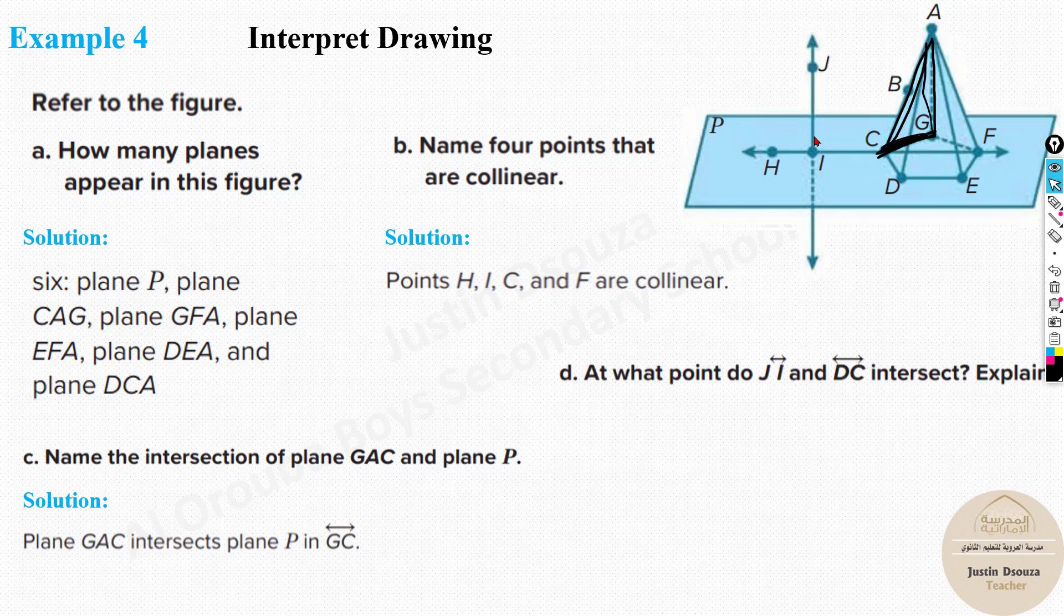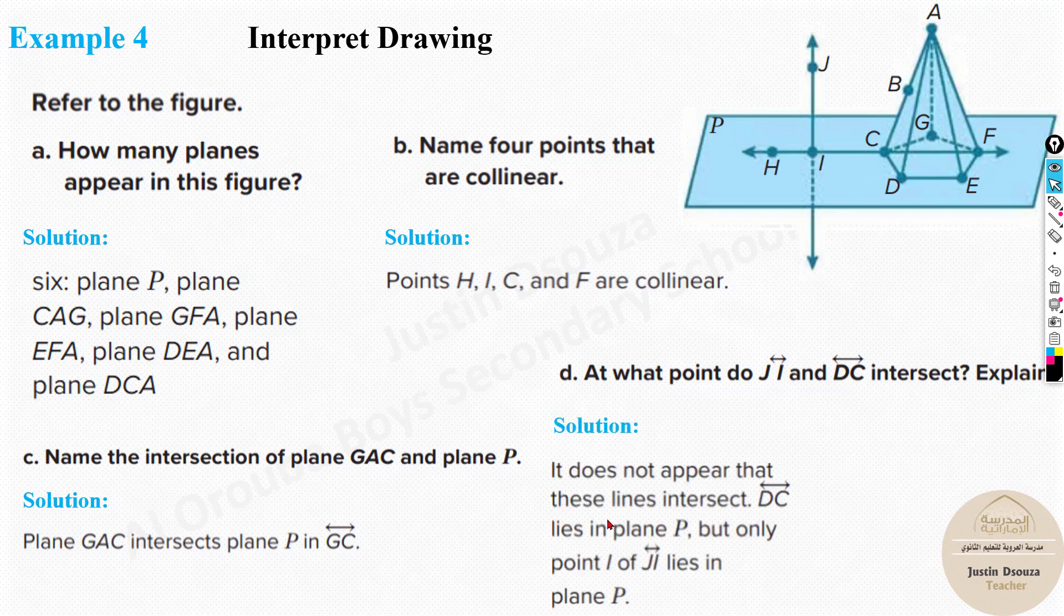Last one. Where does JI, this is J, I, and D, C? Where is D? DC is over here. Now this is a trick question. J, I, and D, C, or C, D. Do they intersect? No, they don't intersect. They don't even touch. IC is touching them both, but they are far apart. So they never intersect. They do not appear that these lines intersect. No. So that's it. But over here, this JI will intersect the plane P at this point and CD would intersect this plane at these two points.